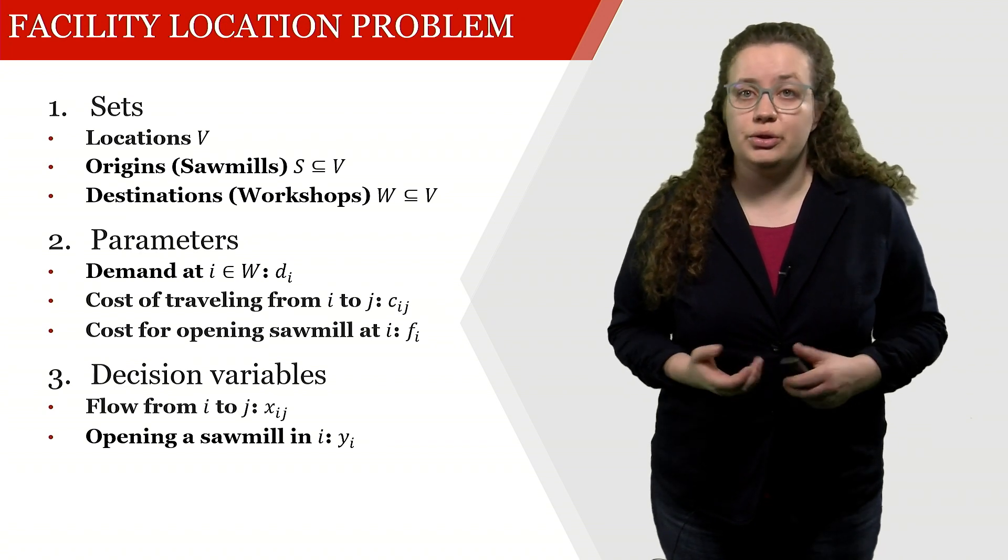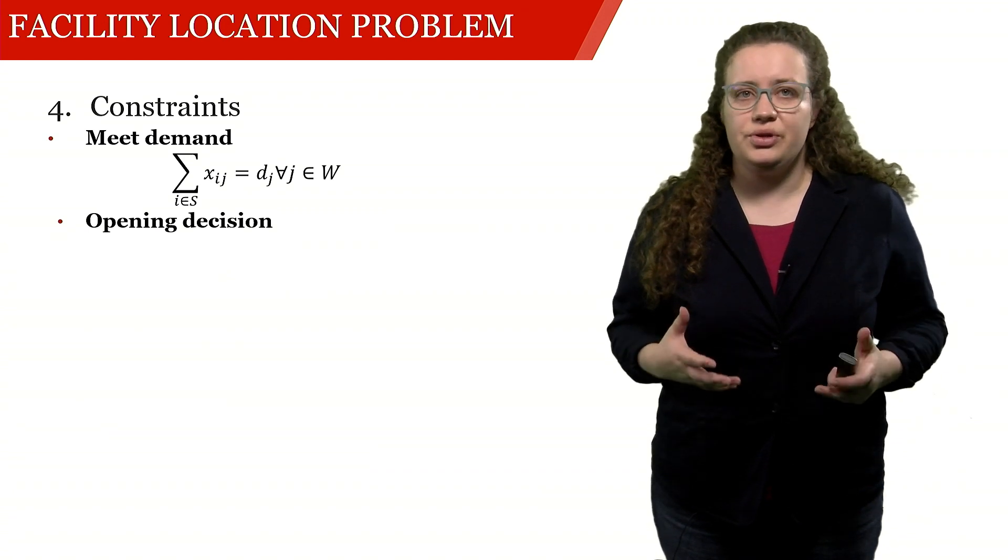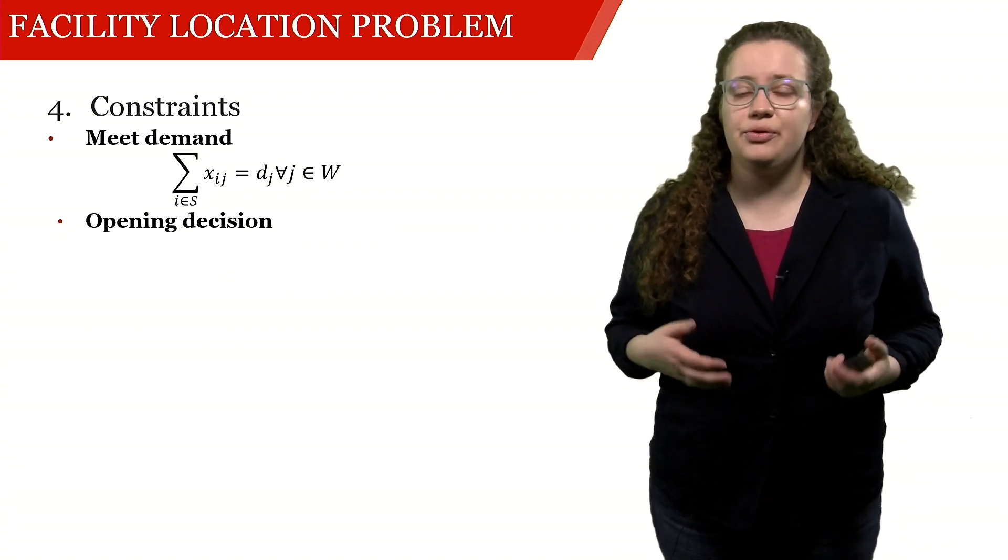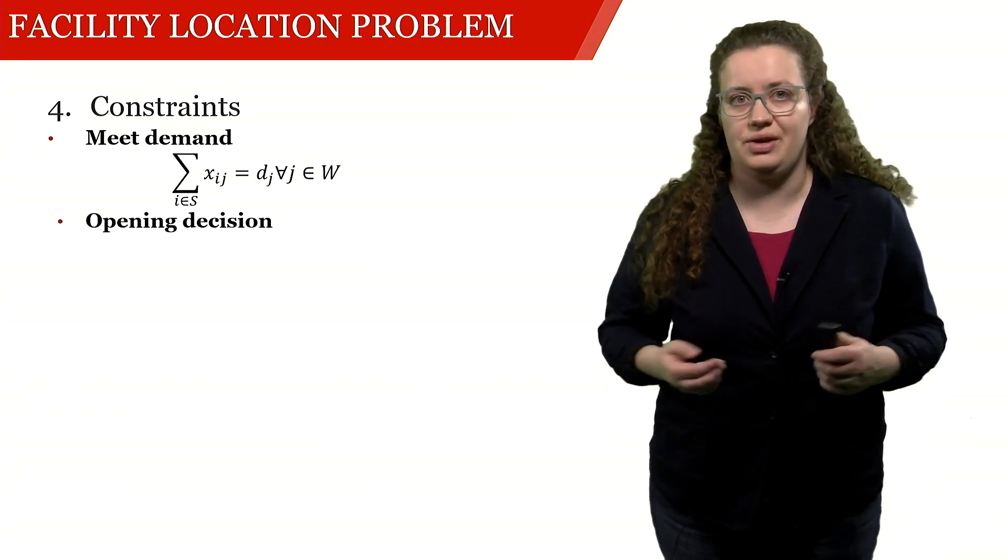Now we can look into the constraints and the objective function. The first constraint that we have to meet is we have to meet demand. So if a workshop requires five truck loads of wood, we have to deliver those five truck loads of wood.